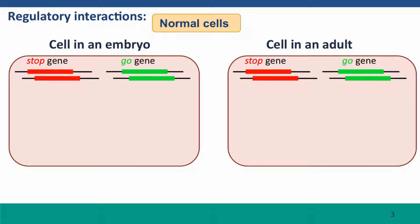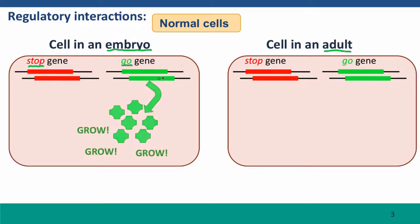Here are the two genes we're thinking about, called stop and go. In a normal embryonic cell, the stop gene is off — it's not expressed — and the go gene is active. The go gene produces a protein product that serves as a growth-stimulating signal for the cell. It may directly stimulate cell growth or regulate other genes, but basically when the go gene is on, cells get the signal that this is the time to grow. This is very typical of what you'd expect in an embryonic cell.